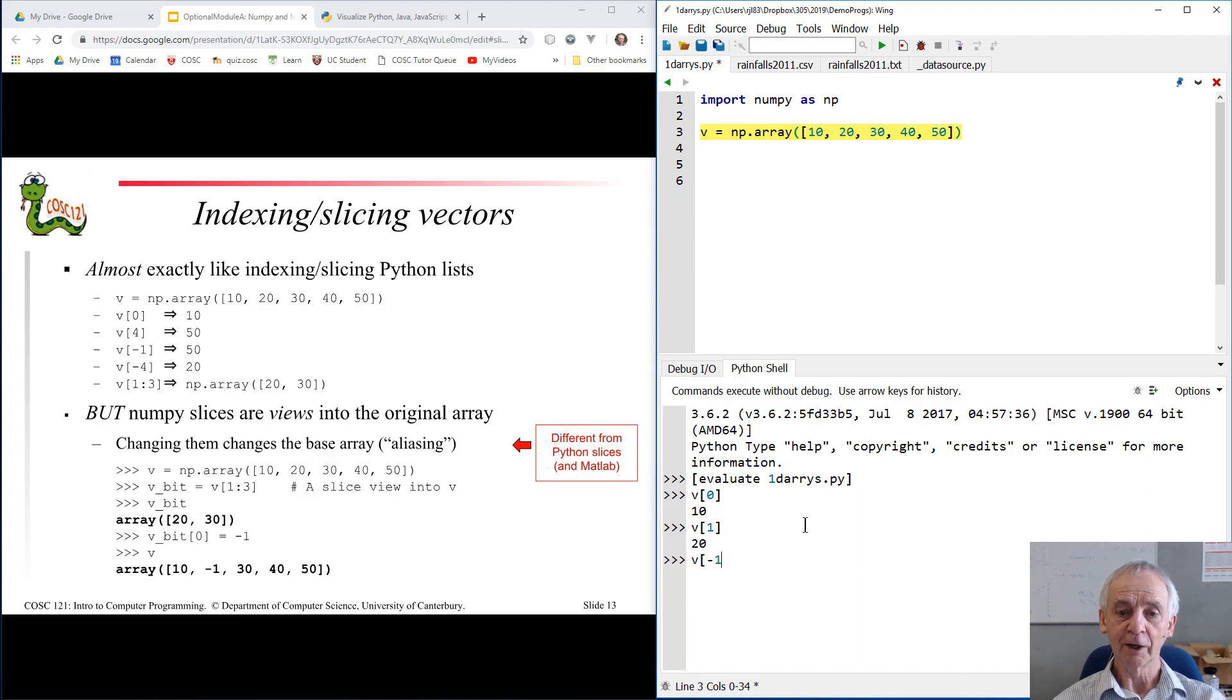I can also use the negative indexing type notation. Remember in Python if you use a negative index, the length of the array is added to it. So in this case we get the last element of the array, 50. V of minus 2, of course, is one further back. That's the 40. No surprises there.